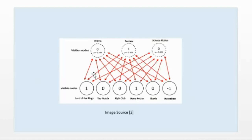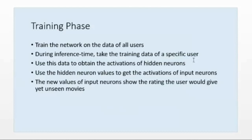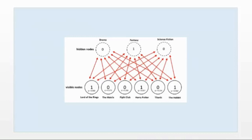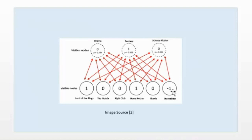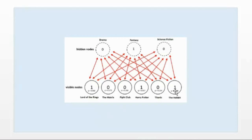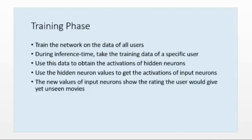The training phase trains the network on data for all users. During inference time, take the training data of a specific user, use it to obtain the activations of the hidden neurons, then use those hidden neuron values to get the activations of the input neurons. The new values show the rating the user would give — for The Hobbit, the user had not given a rating (minus one), but now the probability becomes one, classified as fantasy.